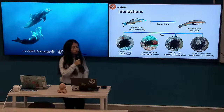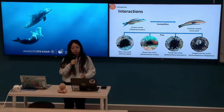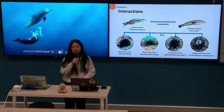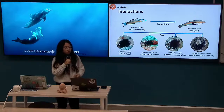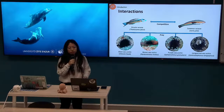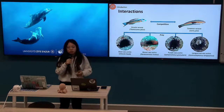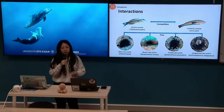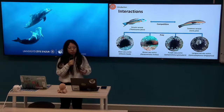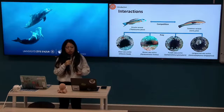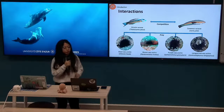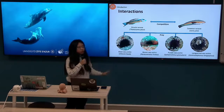The two key interactions for the Ornate Wrasse are competition and predation. In general, animals can compete by reducing the availability of shared resources or by reducing the competitor's ability to retrieve those resources. We use the Ornate Wrasse and Common Wrasse because they are very abundant in the Mediterranean Sea, have almost the same size, and share similar habitat preferences, feeding strategies, and prey — specifically sea urchins.